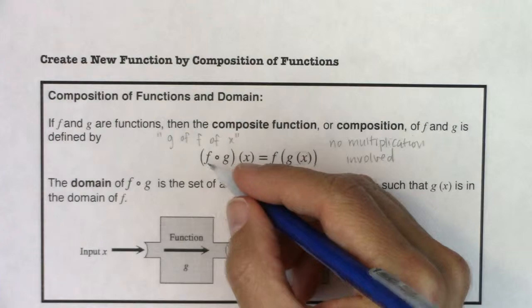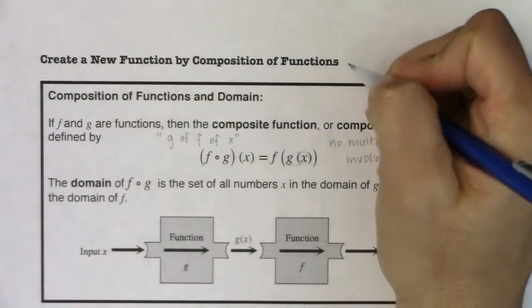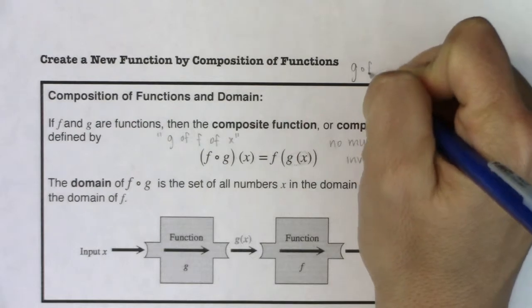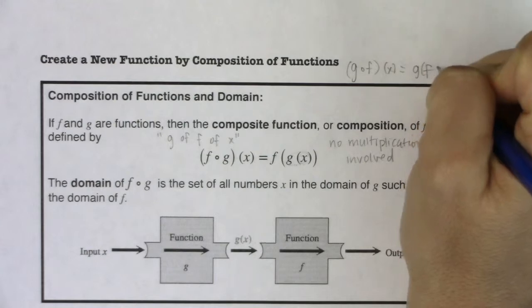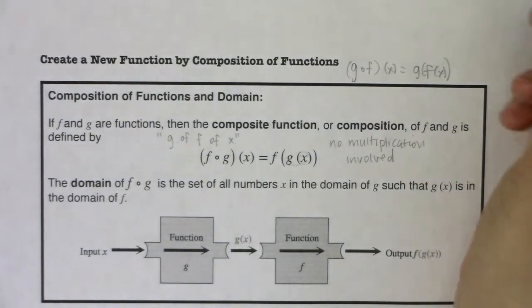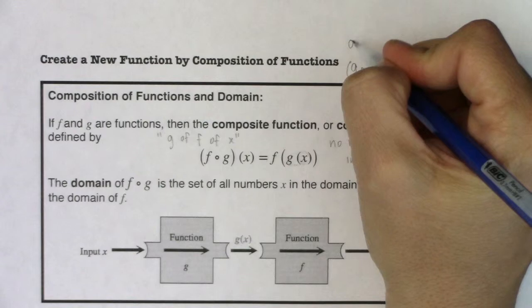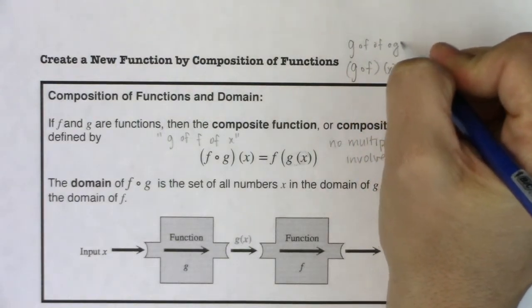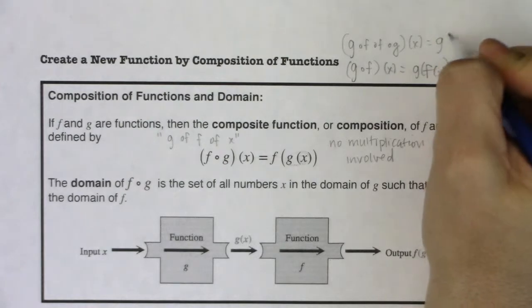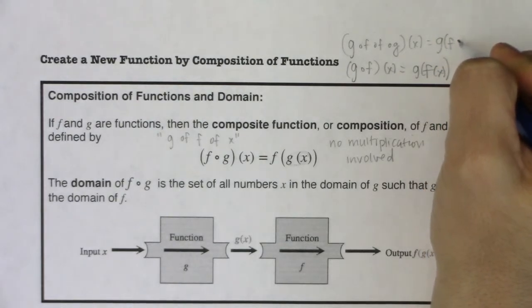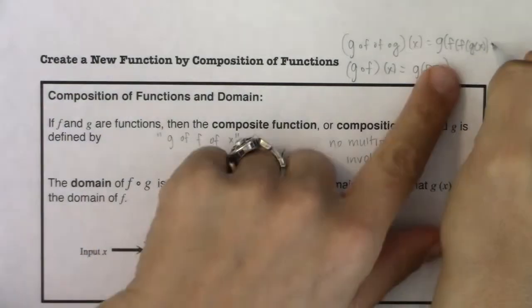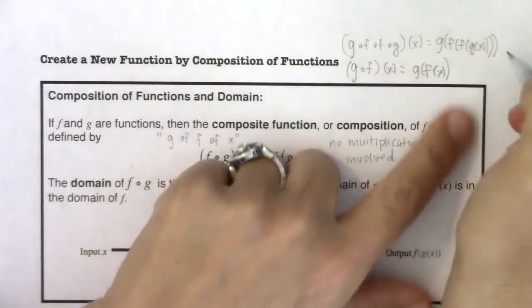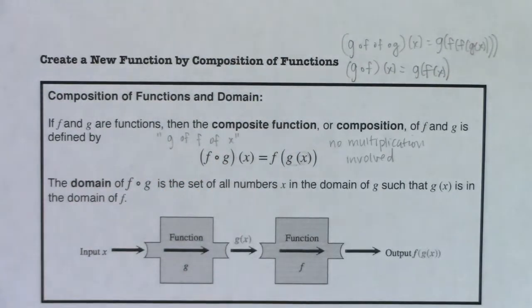You don't have to go in this order — there are as many function compositions as you want. You could do g of f of x, which we will in the next example. And you could actually compose as many functions as you want, like g of f of f of g of x. We'll primarily stick to two or three.